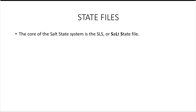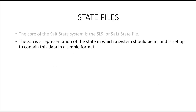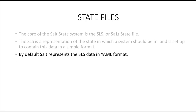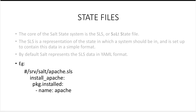Next, we have state files. State files are at the heart of the configuration management component of salt. State files are also known as SLS files. The SLS file is a representation of the state in which a system should be once we run the state file on that particular system. So a state file is equivalent to the playbook in Ansible for those who are familiar with Ansible. By default, the SLS files are in YAML format. Here is an example. The name of my state file is apache.sls. It is present at /srv/salt. This is the default file root. We had defined file roots in the master configuration in the previous video. By default, the file root is /srv/salt.